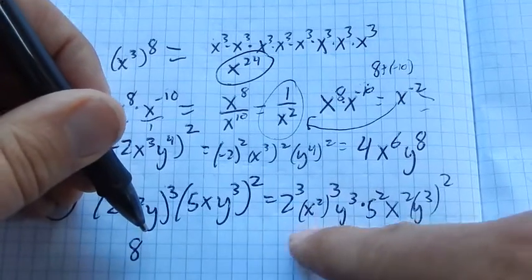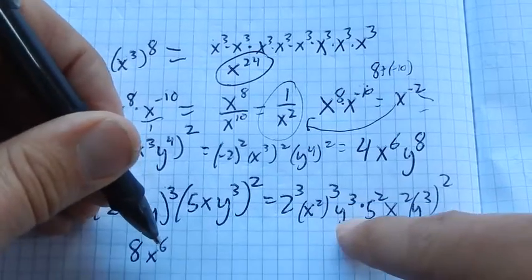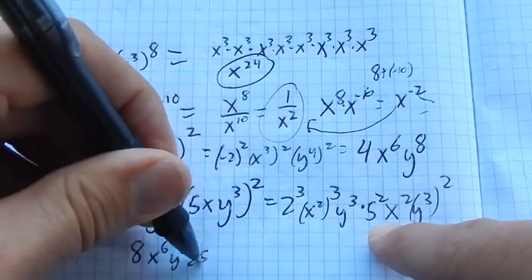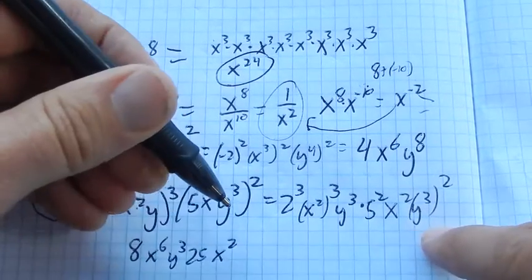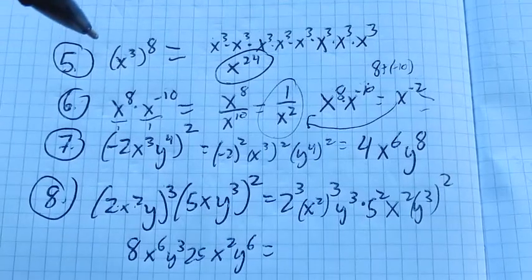So let me start to resolve these. 2 cubed is 8. x squared cubed is x to the sixth. I have a y cubed. 5 squared, 25. x squared is x squared. y cubed squared is y to the sixth. So far, so good.